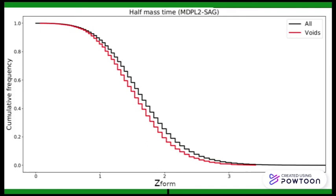The figure shows the cumulative fraction of formation redshift for the halos in voids with the red line, and the mean result for the complete catalog with the dark line. As we see, the halos in voids get formed later than the mean, so they are younger.